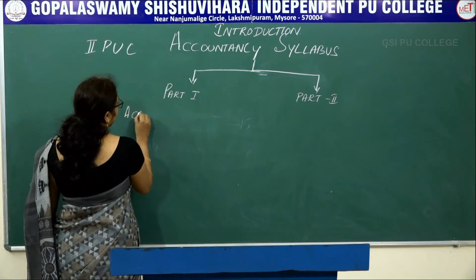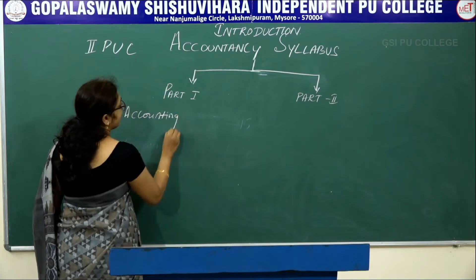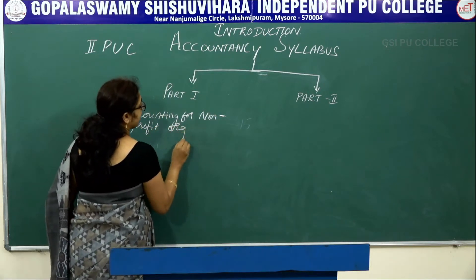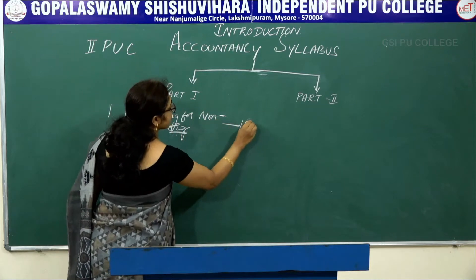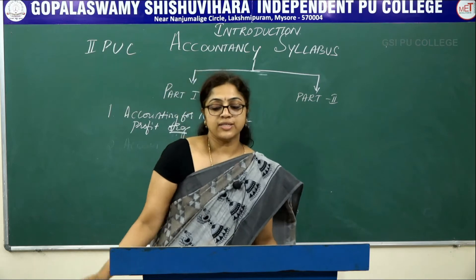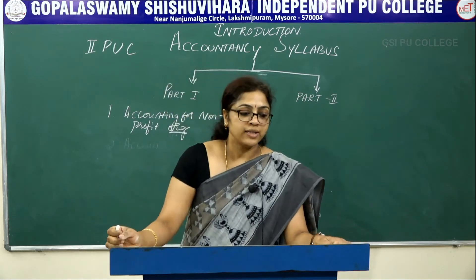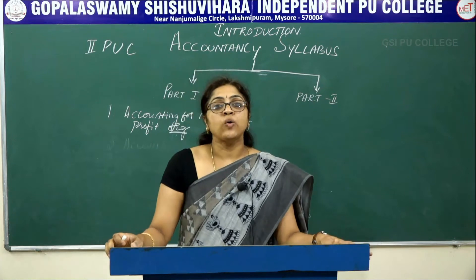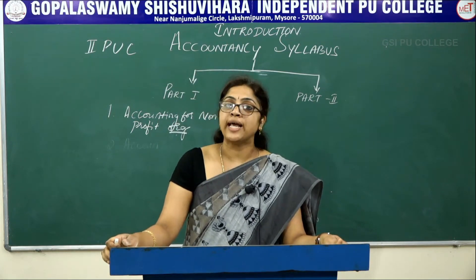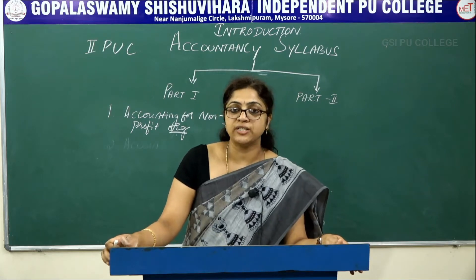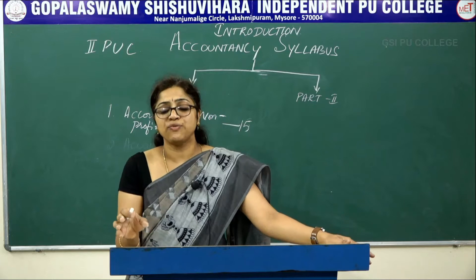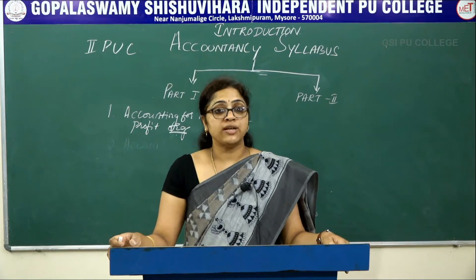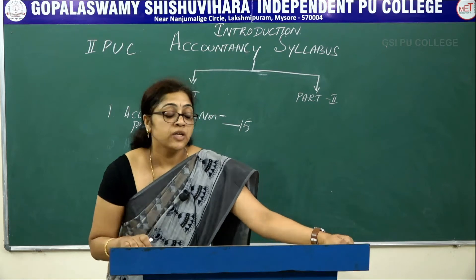In Part 1, the first chapter is Accounting for Non-Profit Organizations. The total marks allotted to this chapter is 15. In this chapter you learn about the meaning and characteristics of non-profit organizations, how to maintain accounting records, receipts and payments account, income and expenditure account, and balance sheet. Non-profit organizations are formed to render service to society — examples include educational institutions, hospitals, and sports clubs.